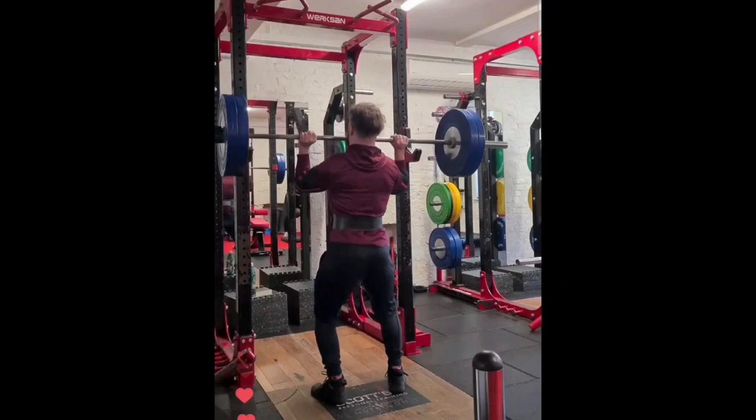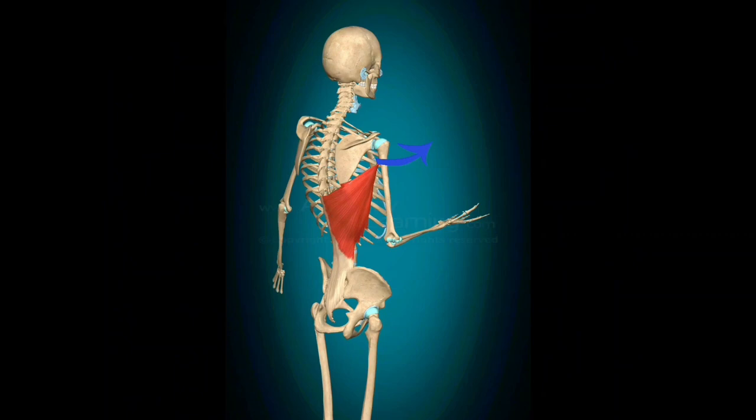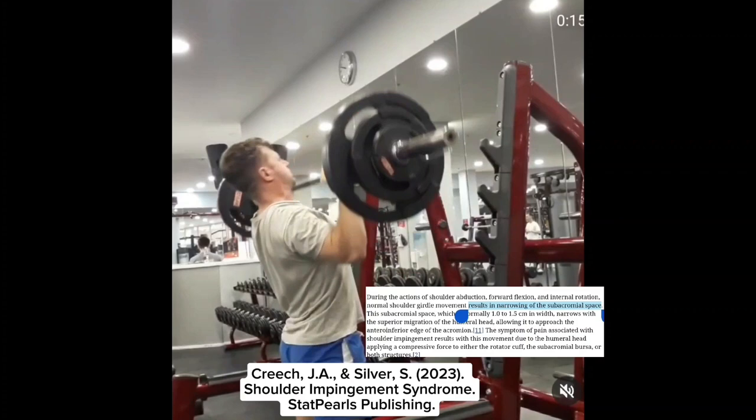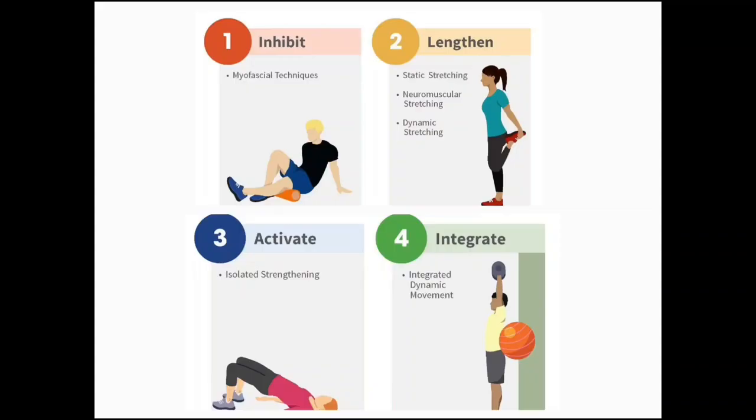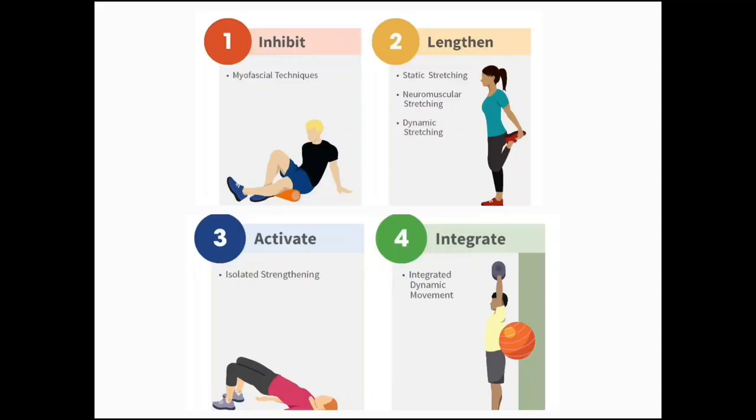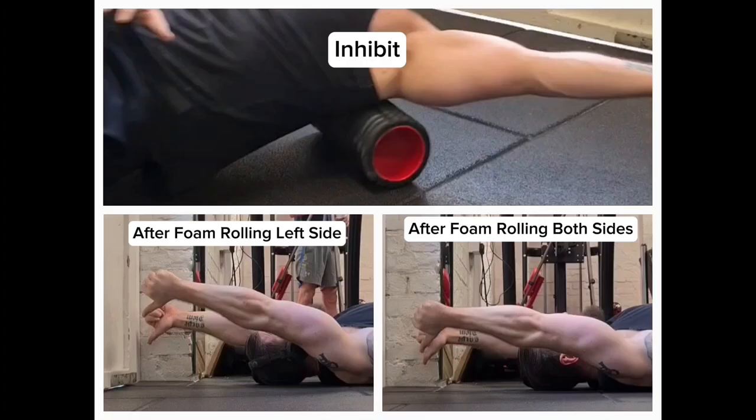The lats are internal rotators, so when tense they can pull the shoulder into internal rotation, which reduces the subacromial space and leads to impingement syndrome. There are likely also issues with scapular protraction and upward rotation, but I focused my intervention on the lats. I followed the NASM corrective exercise continuum, which has been shown to lead to improvements in spinal overextension. The inhibit phase involved foam rolling the lats, and retesting shoulder flexion showed improvements. The lengthen phase involved static stretching of the shoulder, and retesting mobility showed further improvements.